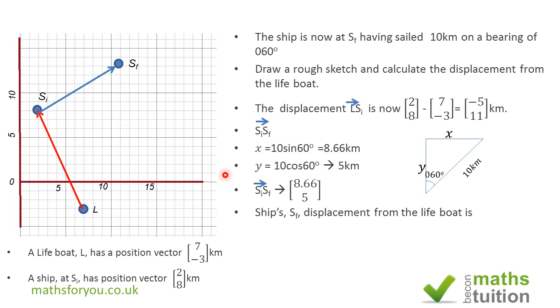We add L S_i and S_i S_f together. That's (-5) plus 8.66 which gives us 3.66, and 11 plus 5 gives us 16. That is our answer. That's L S_f, or the distance from S_f to L.